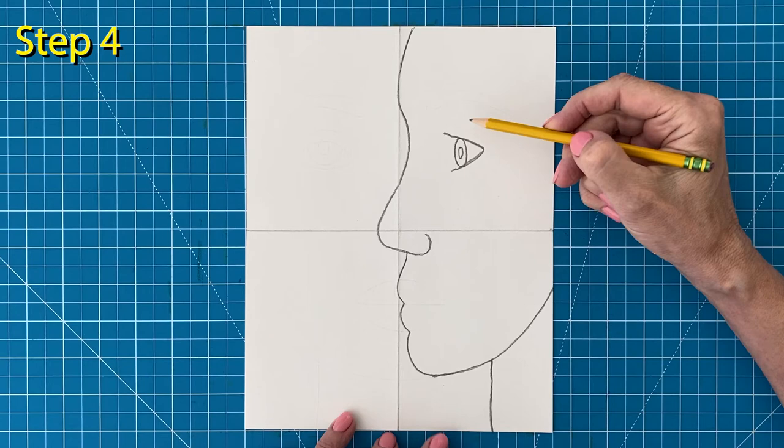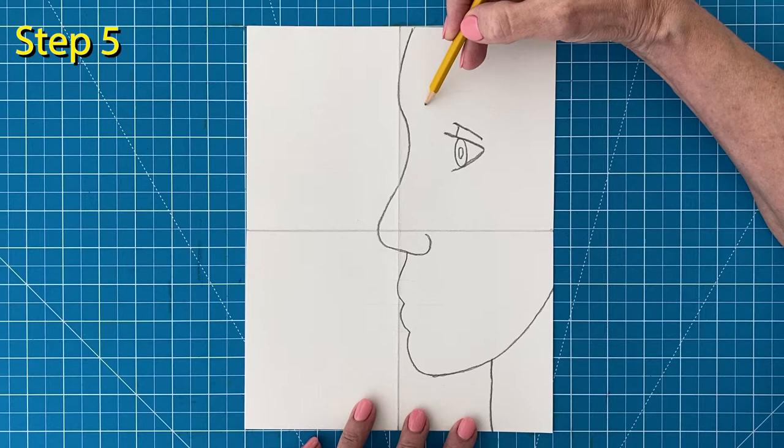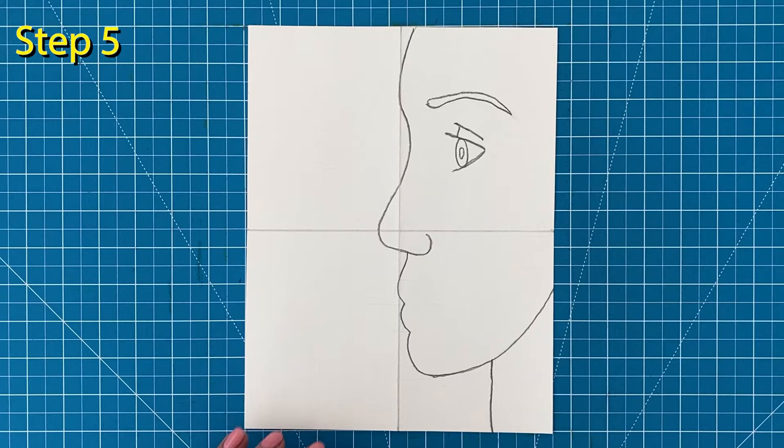Step number five: Add an eyebrow above the eye, then draw the mouth to finish the profile side of your face.